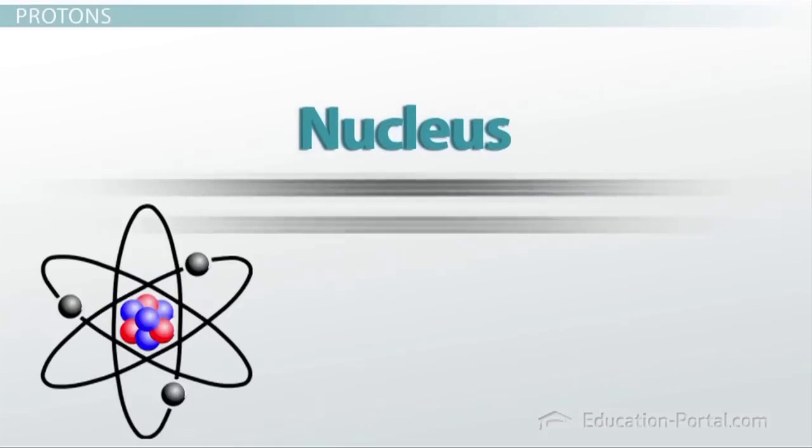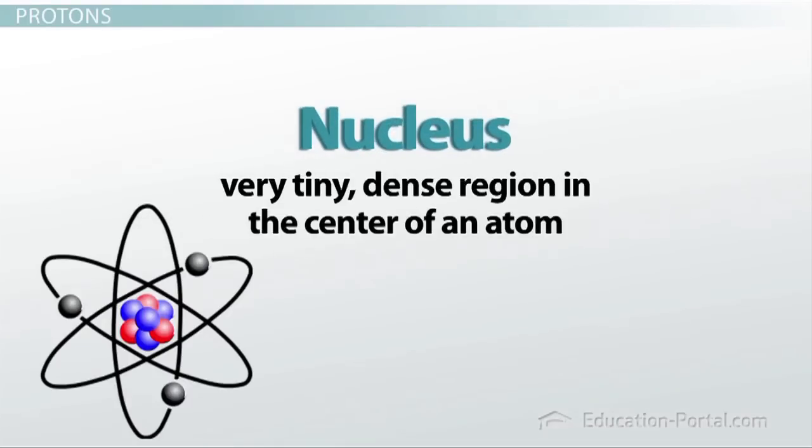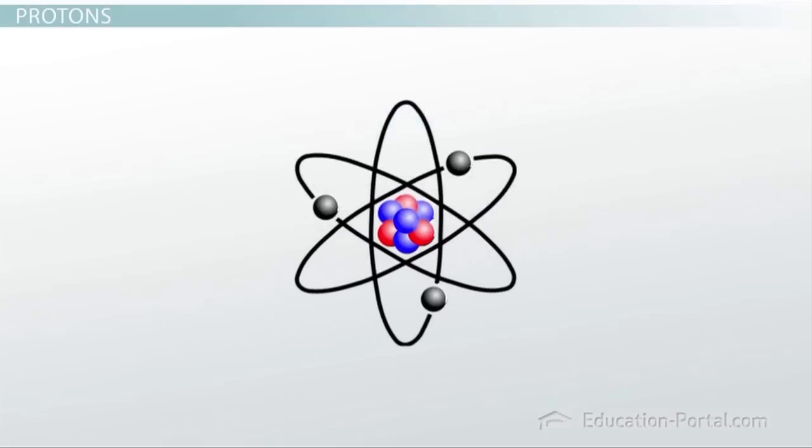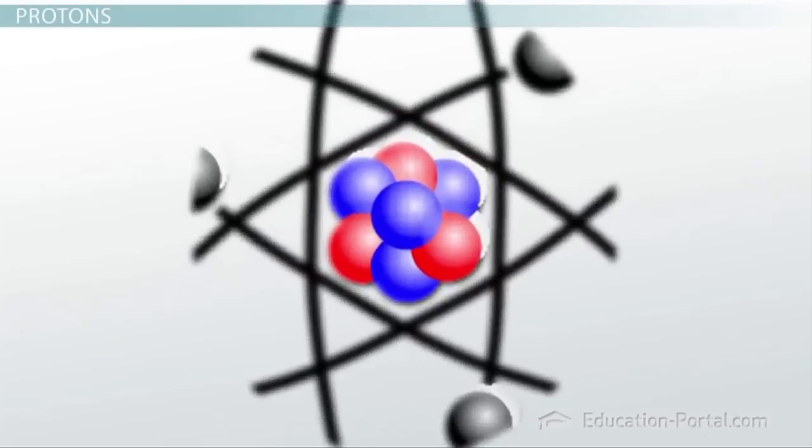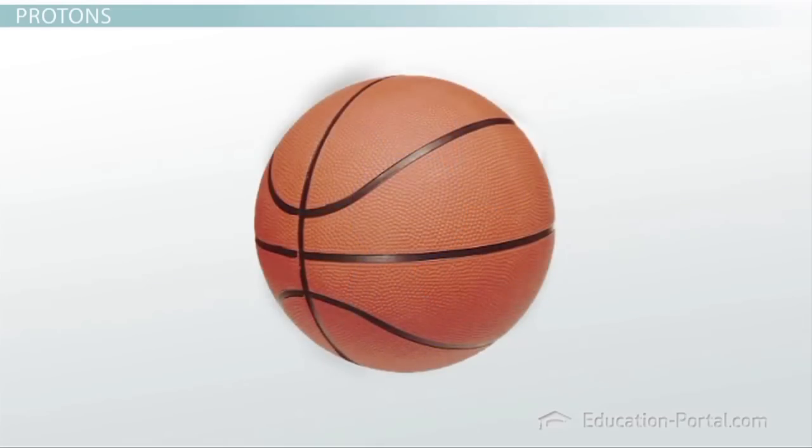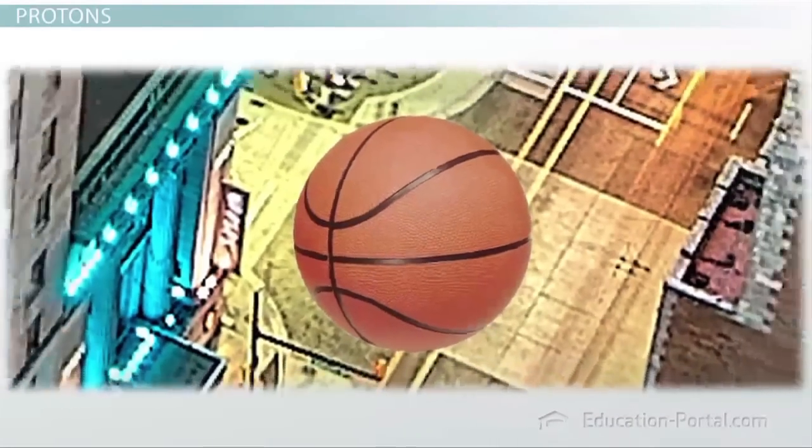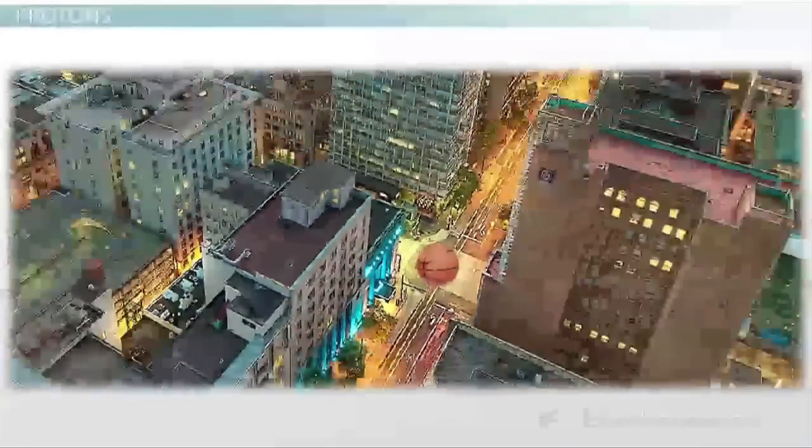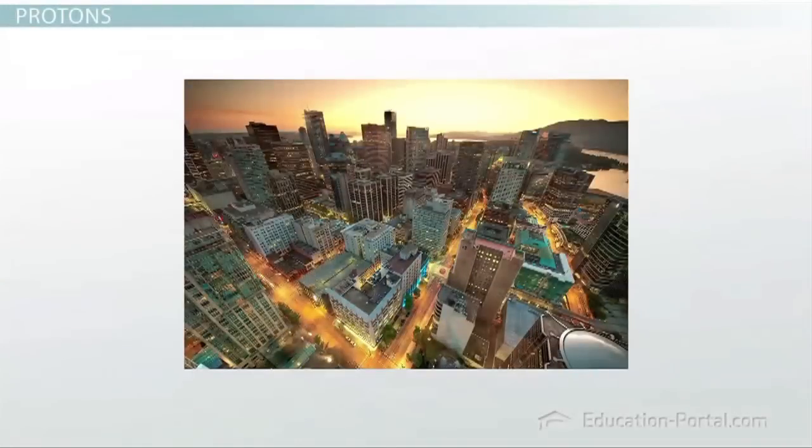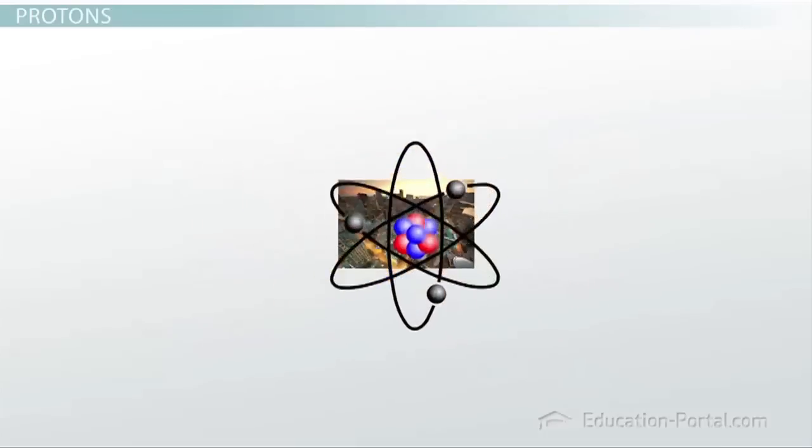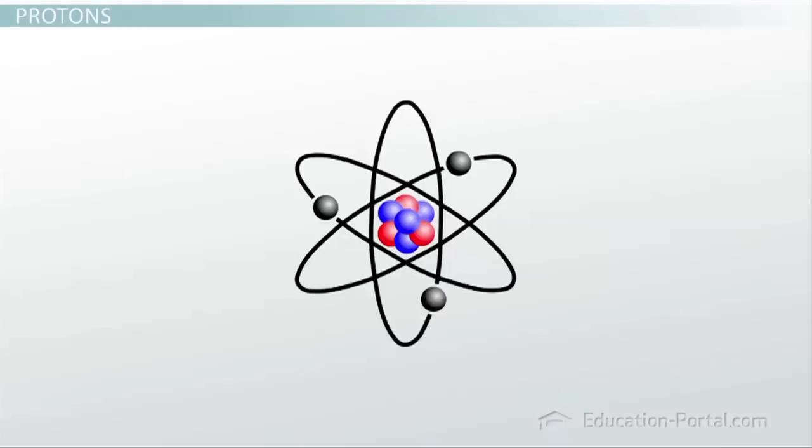The final feature of a proton is that it is tucked away inside the nucleus of the atom. The nucleus is the very tiny, dense region in the center of an atom. The nucleus is so tiny that if the nucleus were the size of a basketball, the rest of the atom would be the size of a large city.